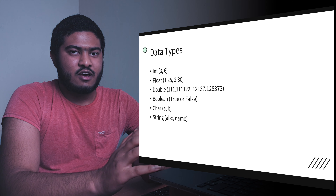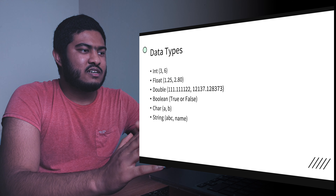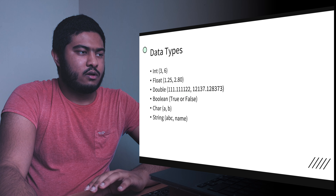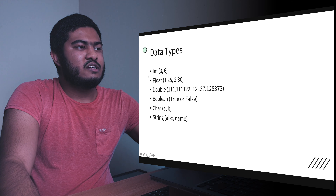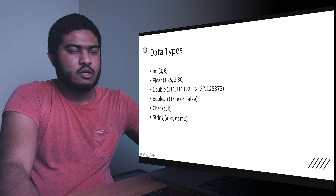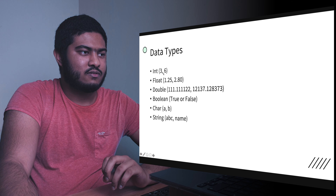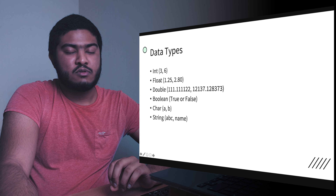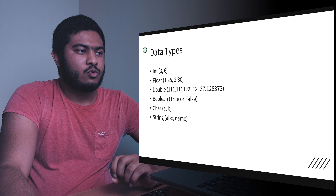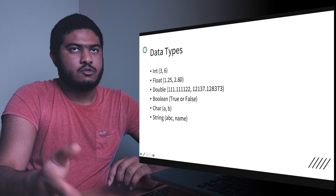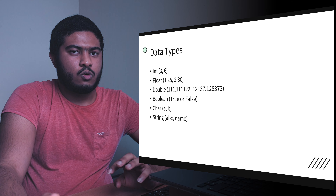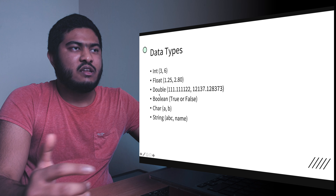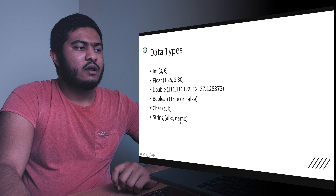Next, data types. These are just a few of the data types available in Java — there are plenty, but these are the main ones we'll use most often. Integer can store only whole numbers: 3, 6, 9, 10, 12, etc. Float can store decimal values like 1.25, 2.80, 3.69. Double can store large numbers, either integer or decimal.